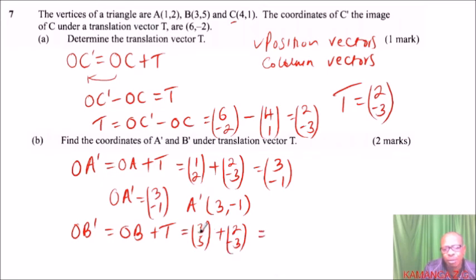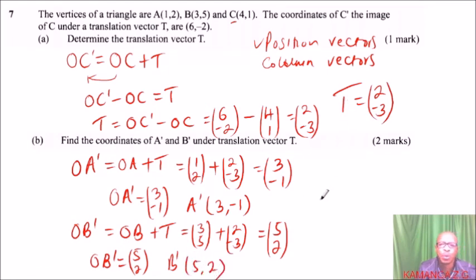And this is equal to 3 plus 2, that is 5, and 5 plus -3, that will be 5 minus 3, and that will give you 2. So, because this is now the position vector, OB' equals (5,2), it means the coordinates of B' are (5,2). And that is how you work out that question, you will be able to get 3 marks like that.